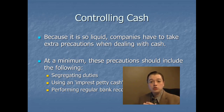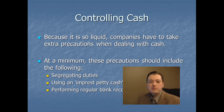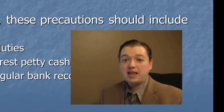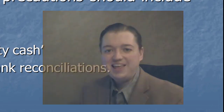We want to put as many controls in place as possible so that we don't lose cash — either to mistakes, theft, or the owner taking money without our knowledge. We put as many controls in place as we can: segregating duties, doing an imprest petty cash fund if we're going to have one, doing a bank reconciliation, and anything else we can do to control cash and keep people from stealing it. When we come back in our next segment, we're going to start talking about accounts receivable and the other receivables.